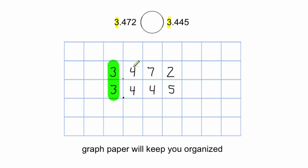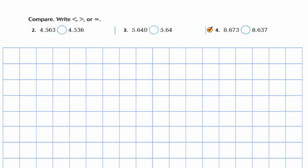The threes are the same. The fours in the tenths place are the same. Now here's where we have our difference — in the hundredths place. Seven hundredths is greater than four hundredths. So the first number, 3.472, is greater than 3.445. That's how we're going to be working these problems: stacking them up and then comparing each place value.